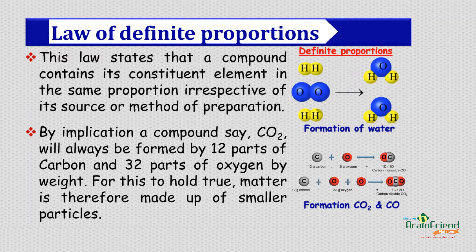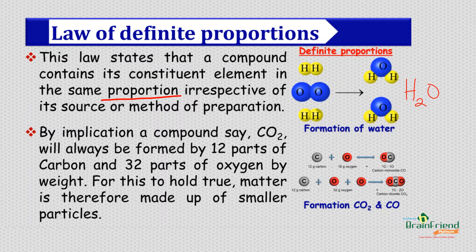Another evidence of the particulate nature of matter is the law of definite proportion. This law states that a compound contains its constituent elements in the same proportion, irrespective of its source or method of preparation. For example, water in its pure state is written as H2O, meaning that wherever you find pure water, it has two molecules of hydrogen and one molecule of oxygen. Whether from rain or a borehole, you will always find the combination in the ratio 2:1 — hydrogen two molecules and oxygen one molecule. Carbon dioxide can also be another example, and we have many examples of compounds that combine in definite proportions.